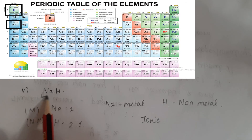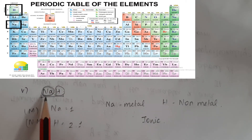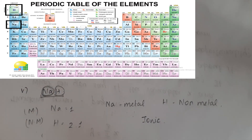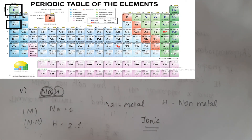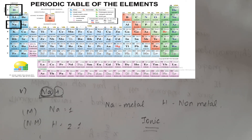Next molecule is NH. Nitrogen is a hydrogen atom — sodium is metal, hydrogen is non-metal. So metal and non-metal: what type of bond forms? Ionic bond forms. So the answer is ionic. If you look at the electronegativity value, the difference is greater than 1.7, so it is ionic.